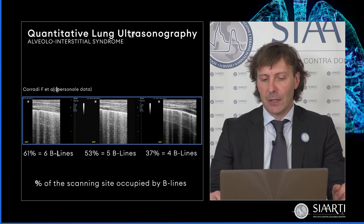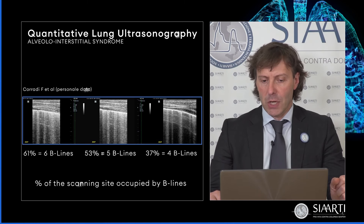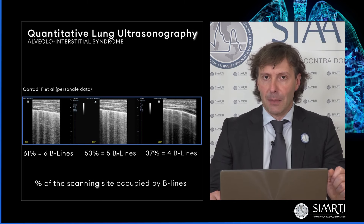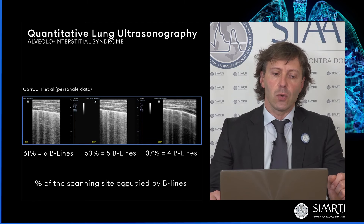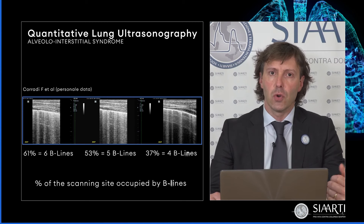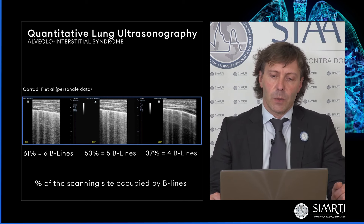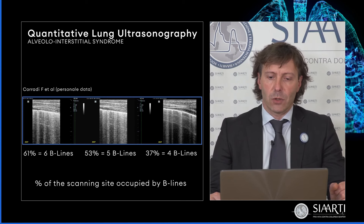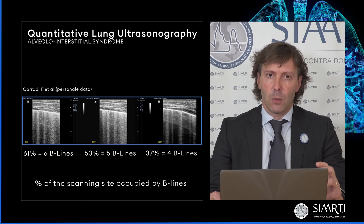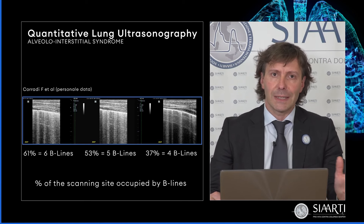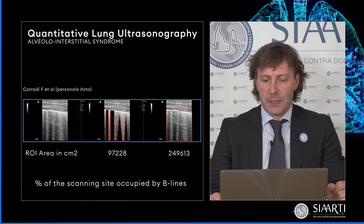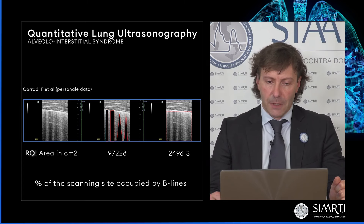Distinguere tra di loro le singole immagini ecografiche può essere difficile e questo diventa rilevante dal punto di vista clinico nel momento in cui i nostri findings e le nostre impressioni devono essere trasformati in un numero per costituire uno score di gravità clinico per il paziente. Questo è una cosa molto facilmente ottenibile con un qualunque software, con un qualunque algoritmo che a livello pixel-pixel riesce a quantificare lo spazio occupato della sindrome interstiziale sulla scansione ecografica.